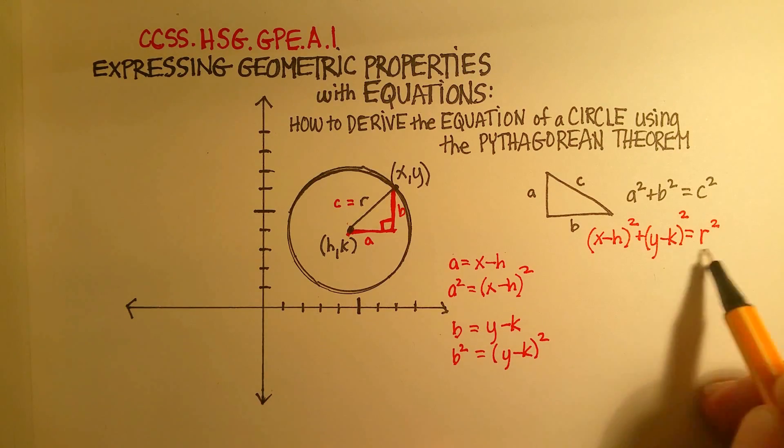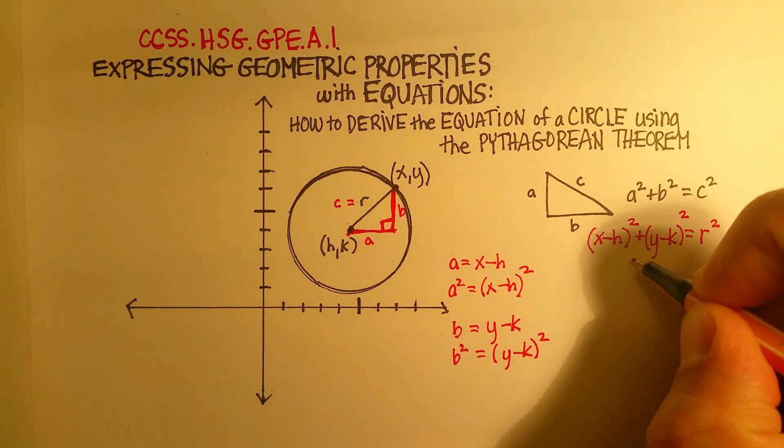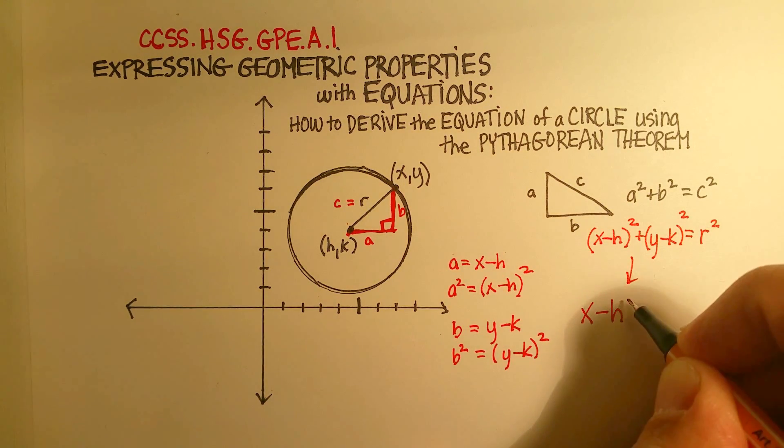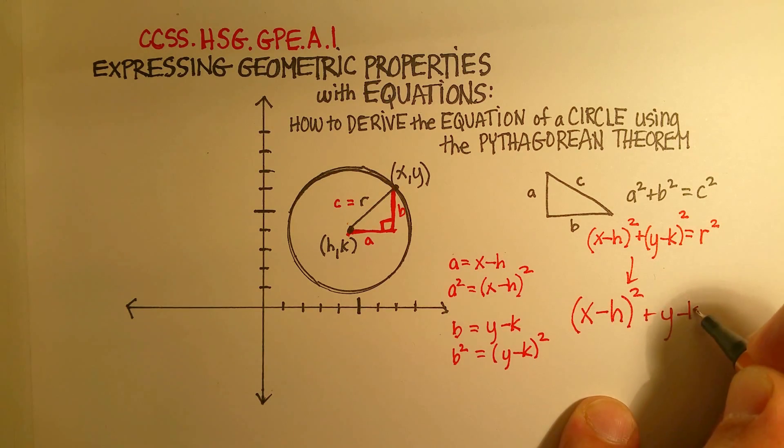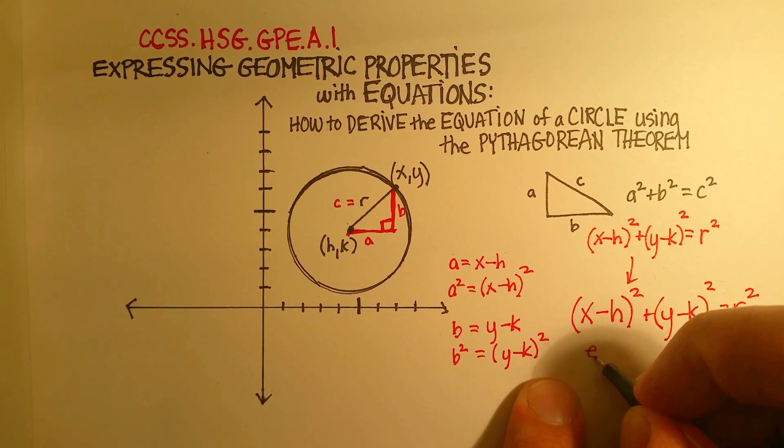This equation right here—(x - h)² + (y - k)² = r²—this is the equation for a circle.